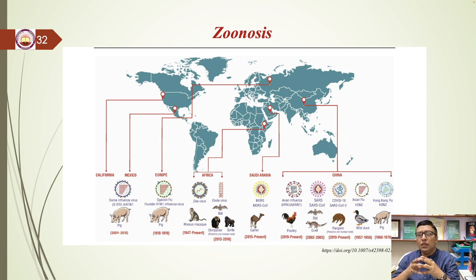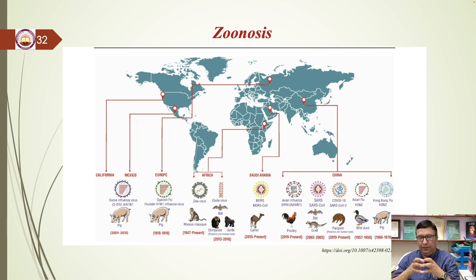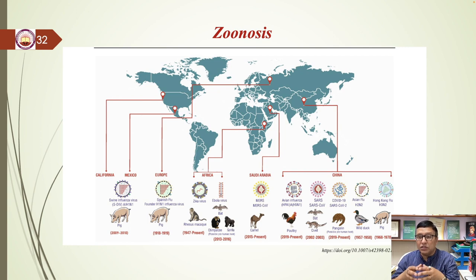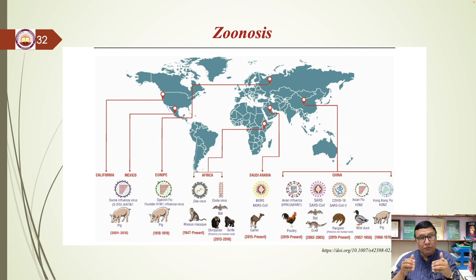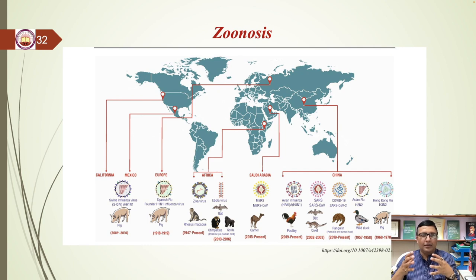As a result, there has been an upsurge in zoonotic illnesses and foodborne zoonoses globally. Emerging illnesses have cost more than $100 billion in direct expenditures during the previous two decades. Around 60% of all viral illnesses in humans are zoonotic, including the newly found virus COVID-19. So the question is: what exactly are zoonoses?